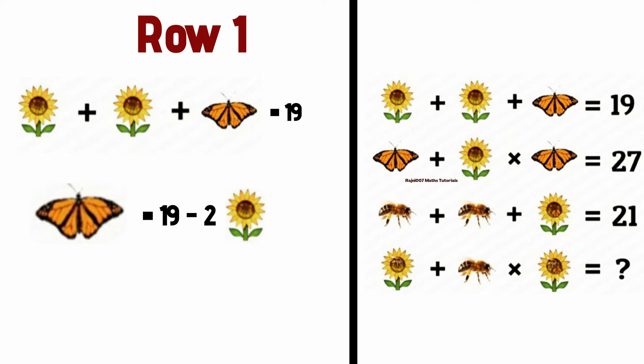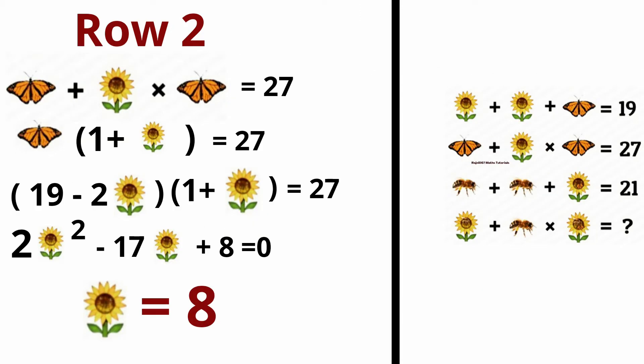So in row 2, you will see what value is butterfly plus sunflower into butterfly equal to 27. If we take butterfly common, then what will happen? Butterfly times one plus sunflower equal to 27.